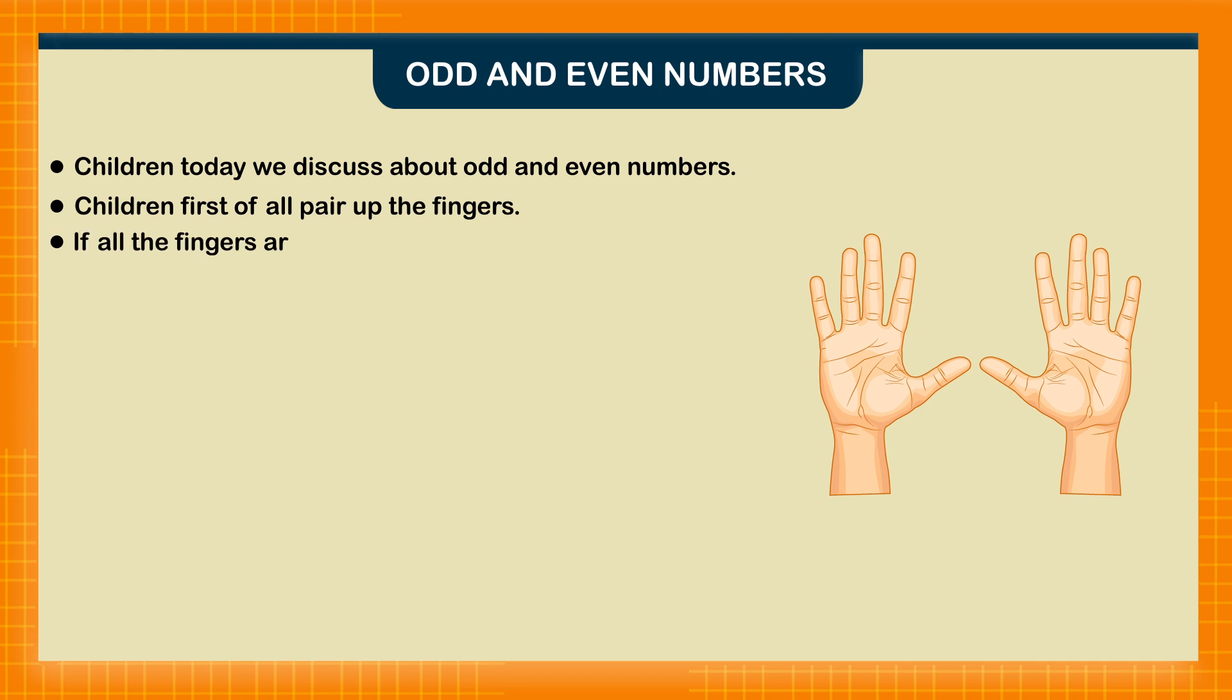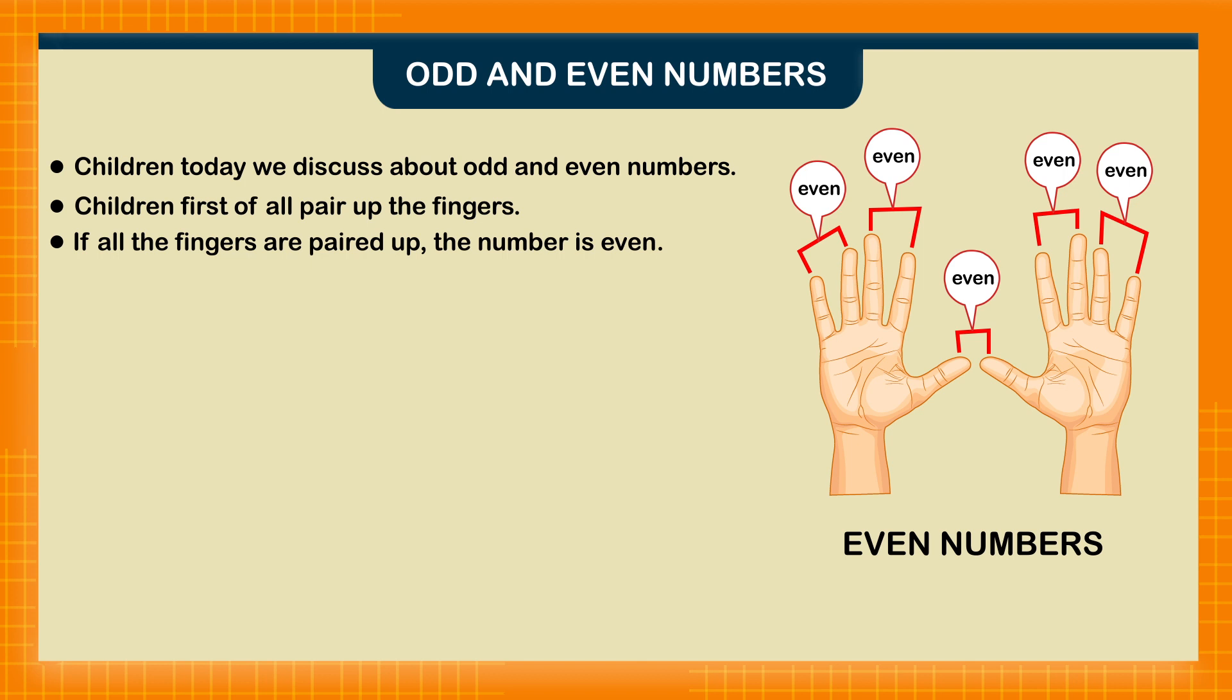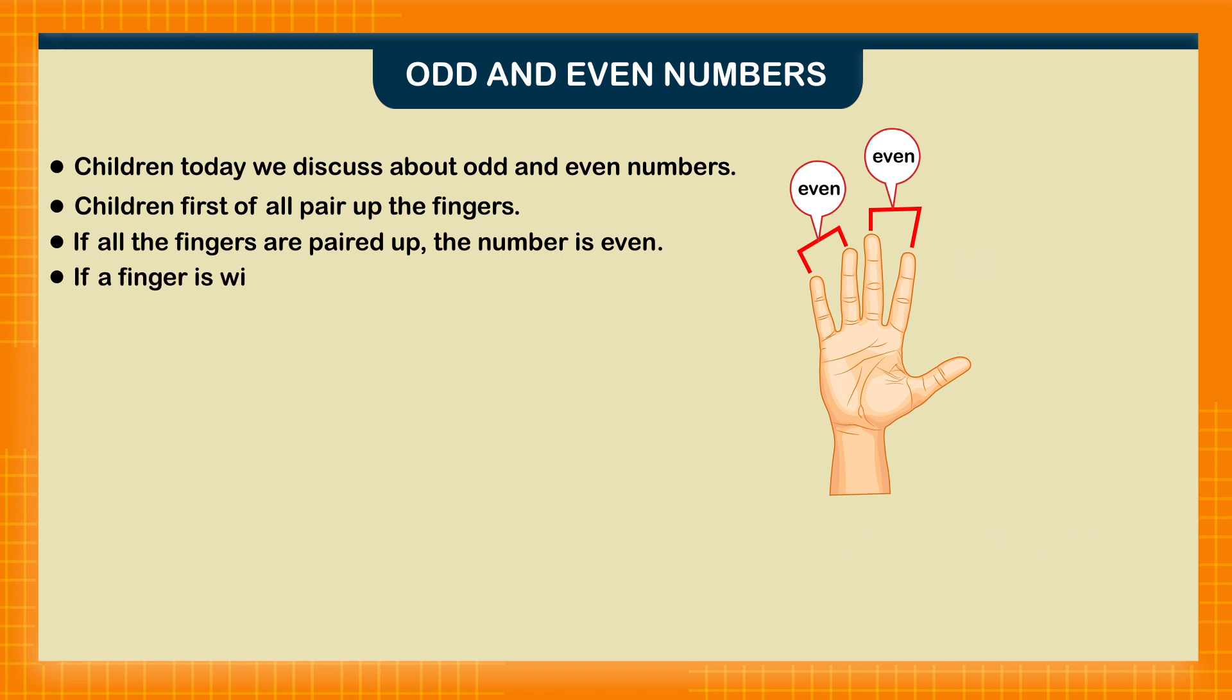If all the fingers are paired up, the number is even. If a finger is without a partner, that is the odd one out, then the number is an odd number.